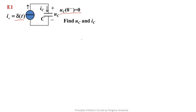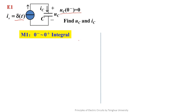For the unit impulse response, we will introduce three solving methods. The first method is called the integral from zero-minus to zero-plus. In this method, we list the differential equation of the circuit and find the integral of the equation from zero-minus to zero-plus.